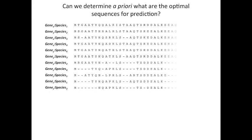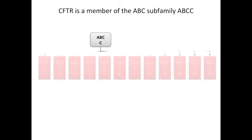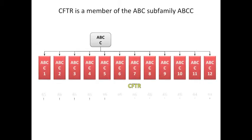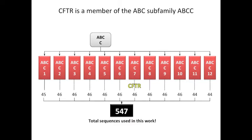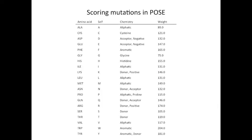We begin by getting a multiple sequence alignment for CFTR homologues and paralogues from the UCSC 46-way genome-wide vertebrate alignments. This gives us a total of 547 CFTR homologues and paralogues. The POSE score function considers three properties when scoring an amino acid substitution. The self property just describes the amino acid conservation at a particular column in the alignment.